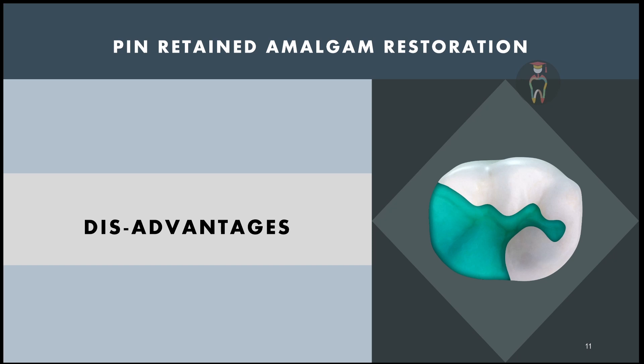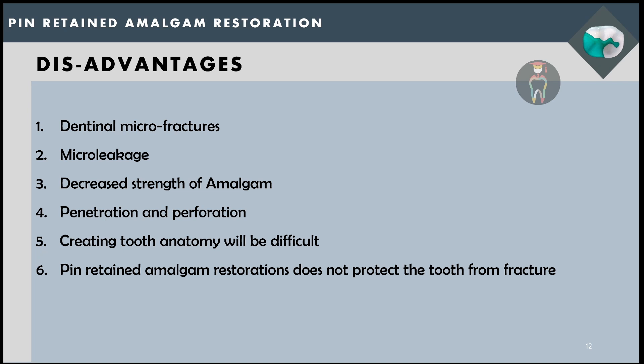Some disadvantages: because of pin placement there can be dentinal micro-fractures leading to tooth fracture, and micro-leakage between the restoration and tooth surface which may lead to secondary caries. The placement of pins increases retention but reduces the strength of the dental amalgam. During placement, a pin can enter the pulp chamber or perforate the external surface of the tooth. In grossly destructed teeth with multiple missing cusps it is very difficult to carve the anatomy intraorally. Also, pin retained amalgam does not protect the tooth from fracture, whereas a well-designed cast metal restoration will.